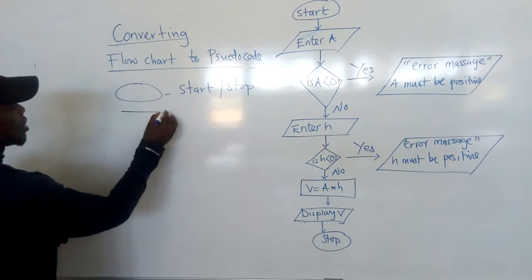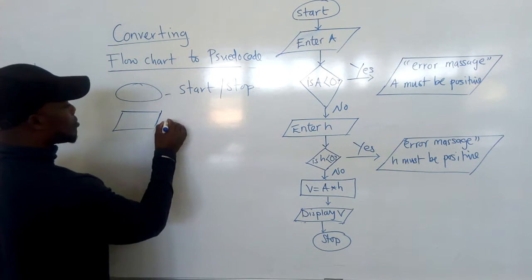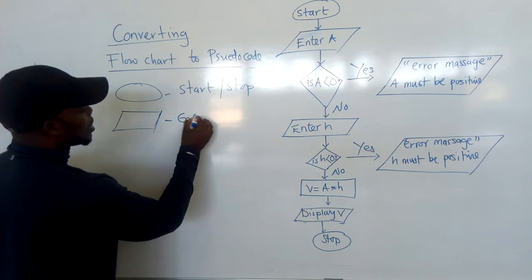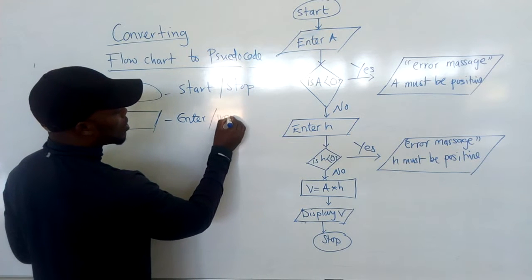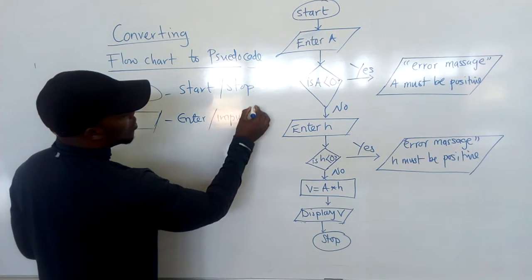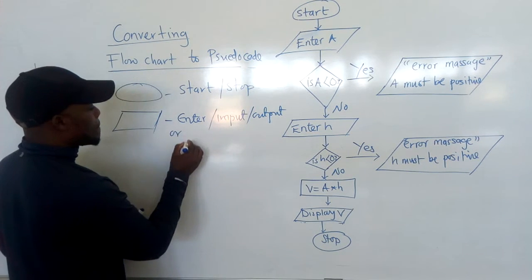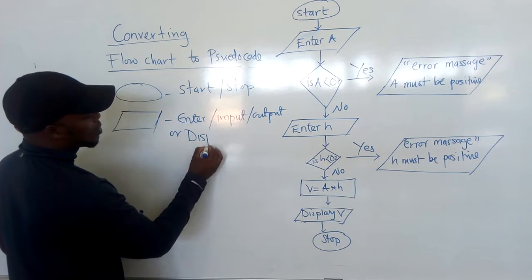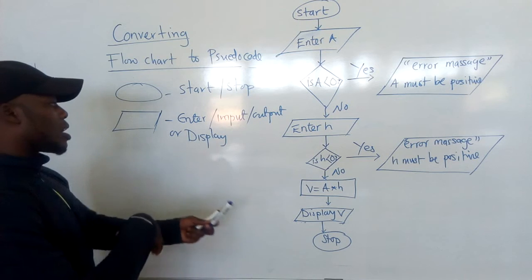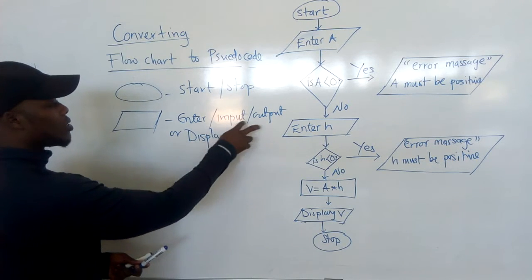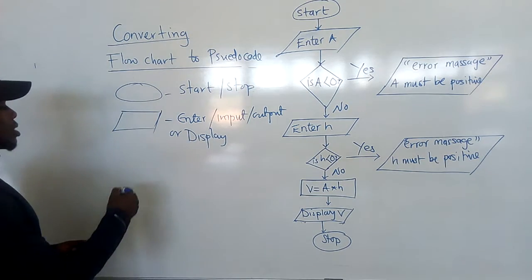Our next shape is a parallelogram. This parallelogram means enter — that's why there is enter here. It means enter, input, output, or display. These are just the same. You are entering something and you see something coming out — this is what display and output mean. Enter and input means you are entering something.